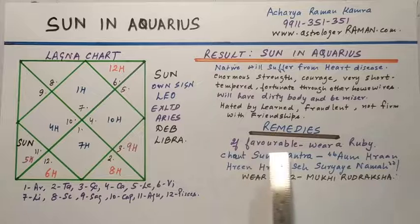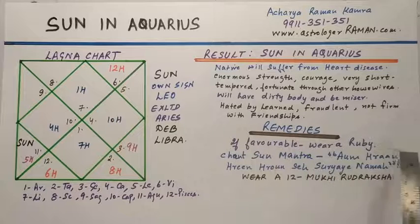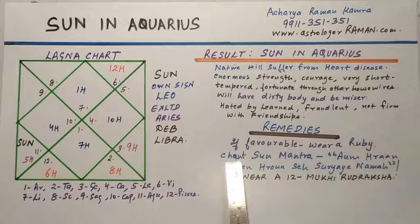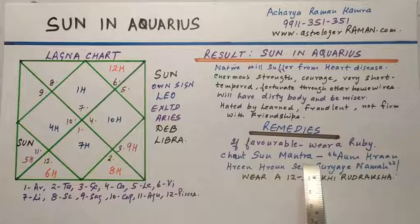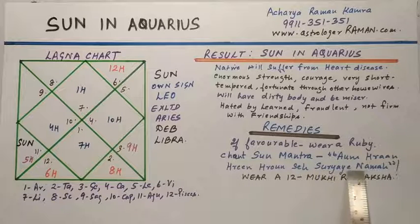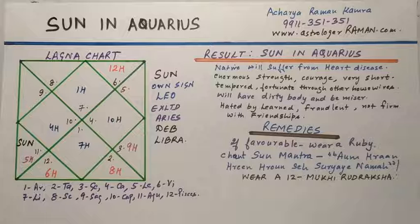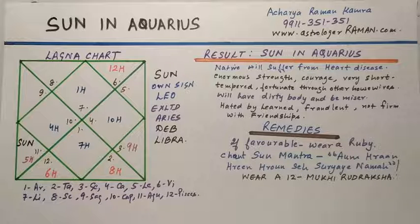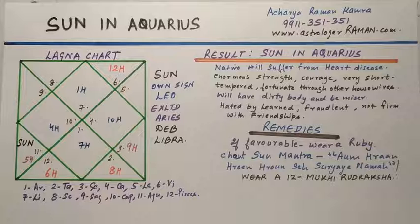Now the remedies: if Sun is favourable then the native should wear a ruby gemstone; otherwise he should chant the Sun mantra — Om Hraam, Hreem, Hroum, Sah, Suryaya Namah — and also he can wear a 12 Mukhi Rudraksha. Friends, these remedies are general in nature; for specific remedies I need to see the chart in totality, then only I can recommend any specific remedy for a native.